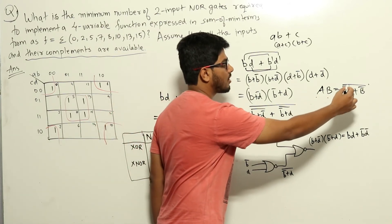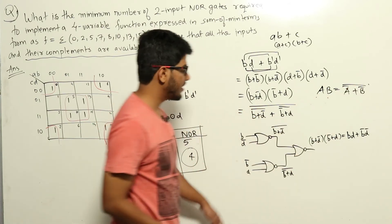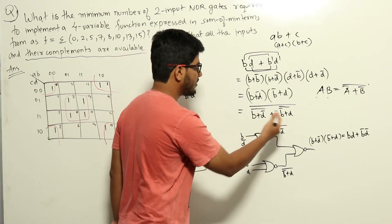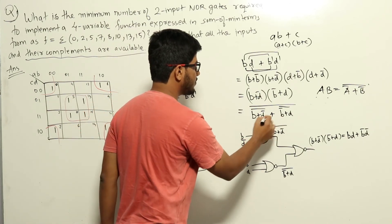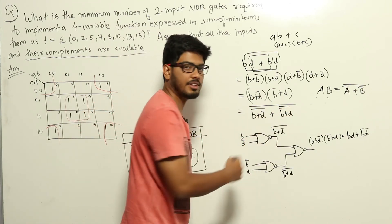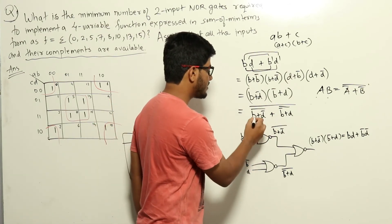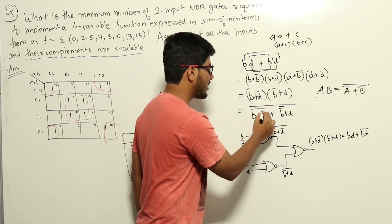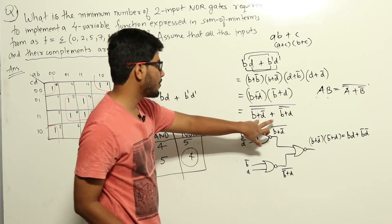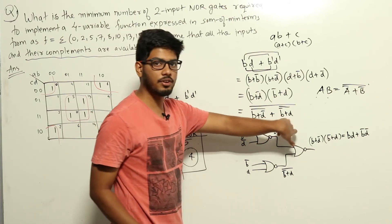So the expression becomes: NOR(B, D') NOR-ed with NOR(B', D). The final expression is the NOR of those two NOR gate outputs. Each inner NOR gate takes two inputs, and the outer NOR gate takes those two results as inputs — giving us the complete NOR-gate-only implementation.